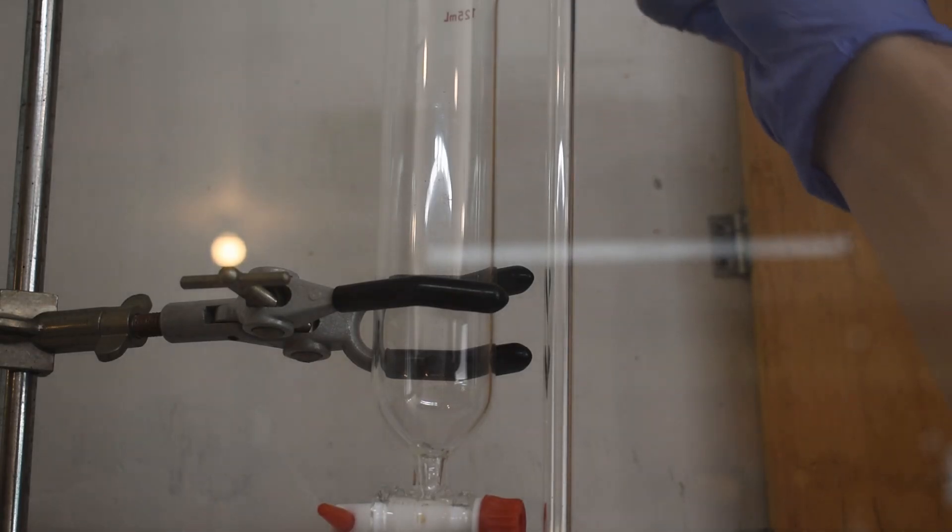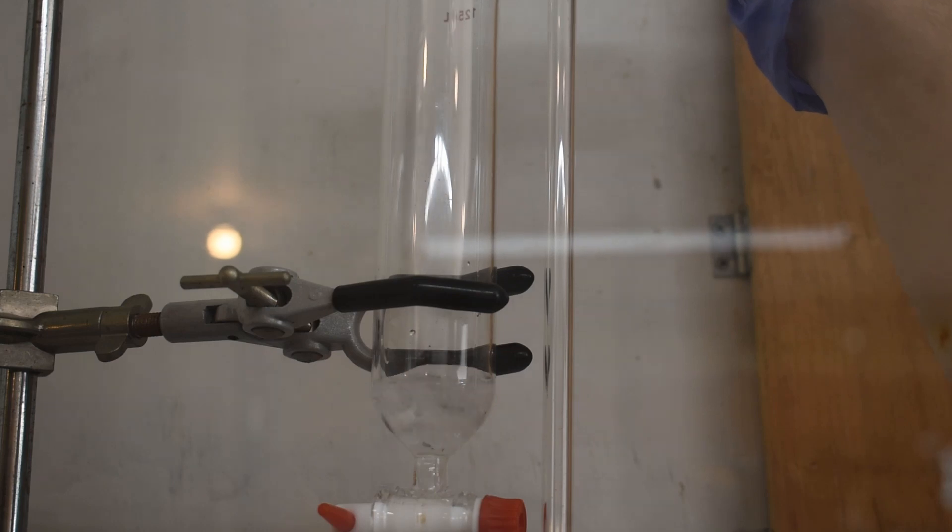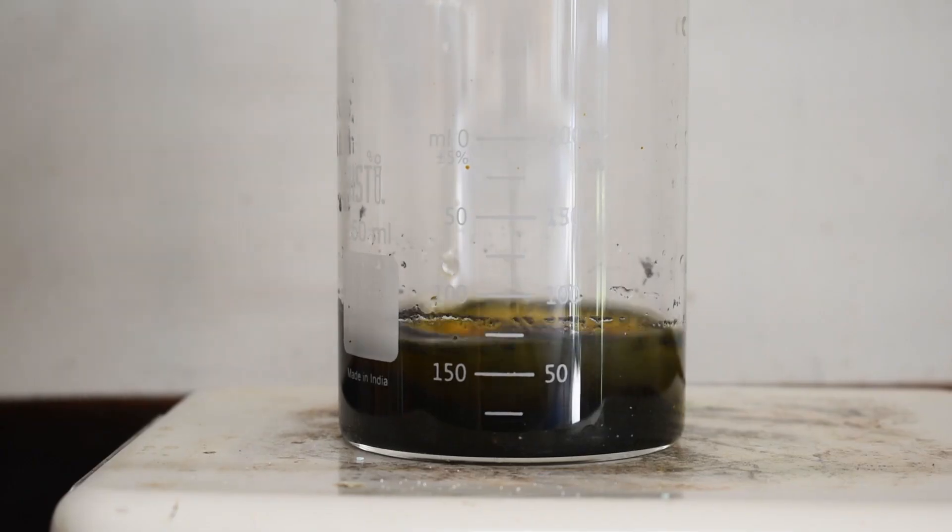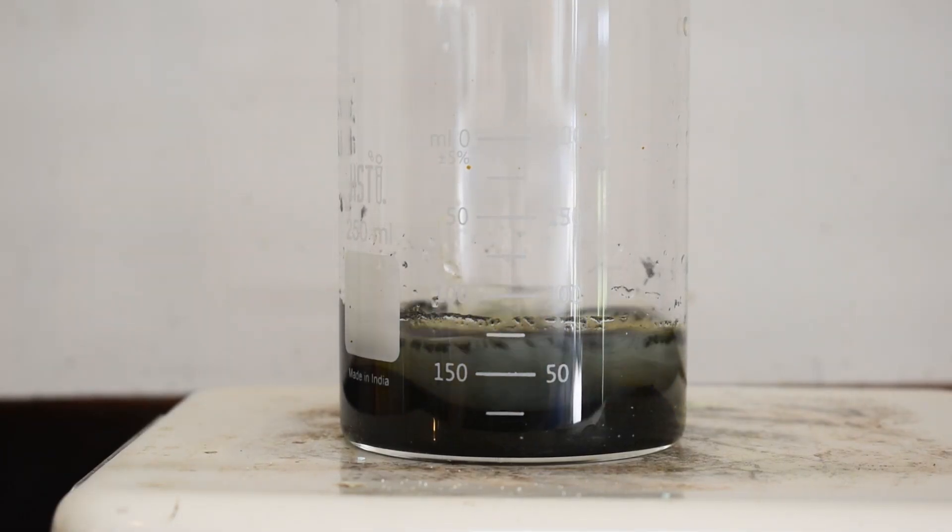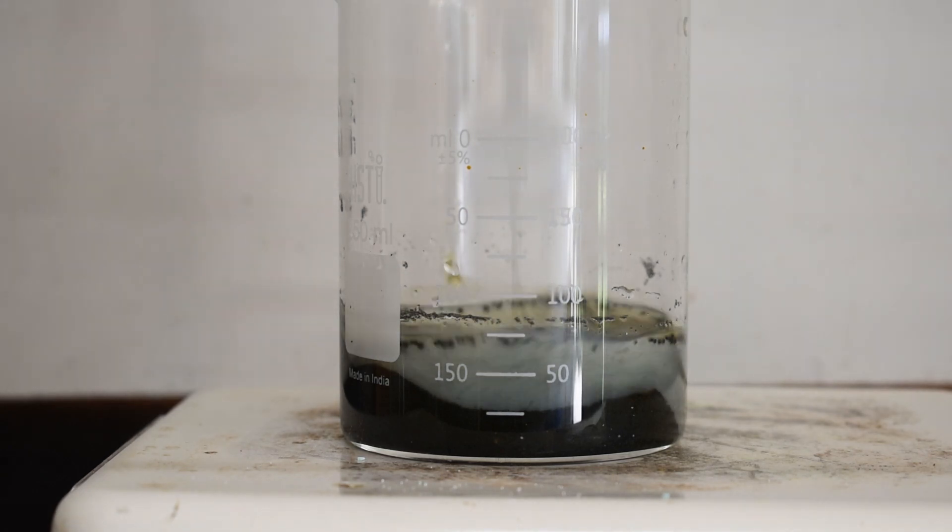Then above the beaker I situated an addition funnel and this contained a solution containing about 1 gram of sodium hydroxide. I then began to slowly drip in the sodium hydroxide and as you can see that causes the solution to go colorless for a minute, however the color will return.